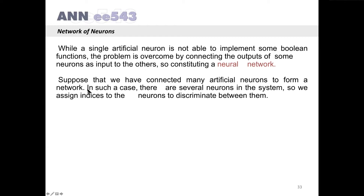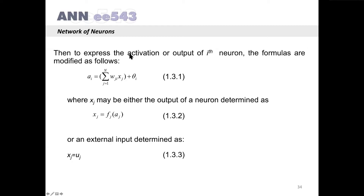Suppose that we have connected many artificial neurons to form a network. In such a case, there are several neurons in the system, so we assign indices to the neurons to discriminate between them. Then, to express the activation or output of the i-th neuron, the formulas are modified as follows.